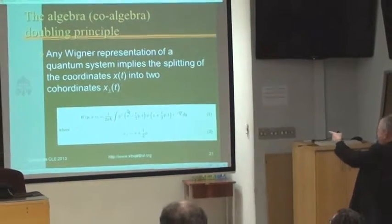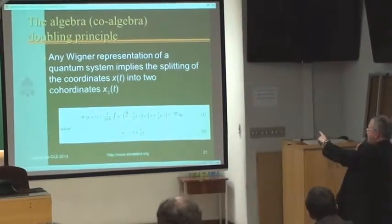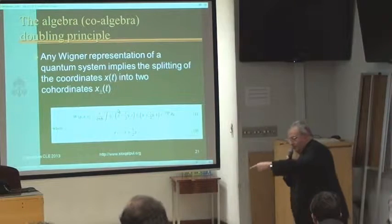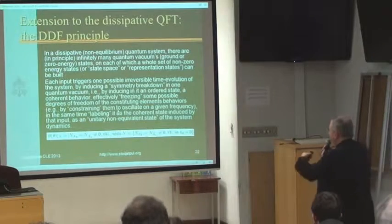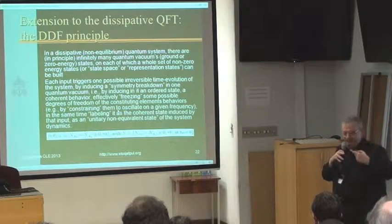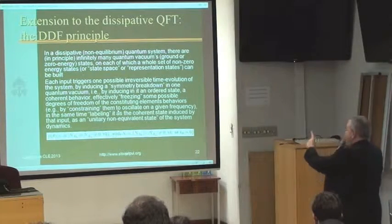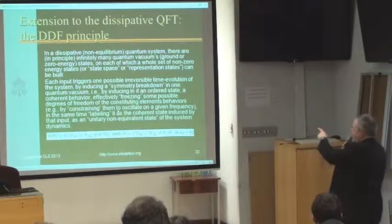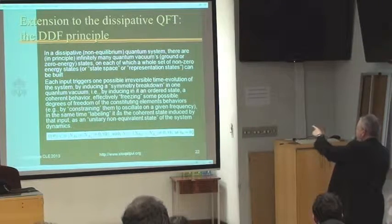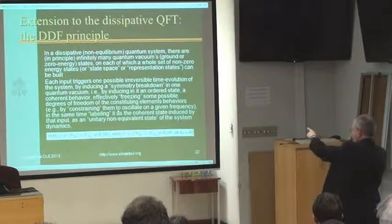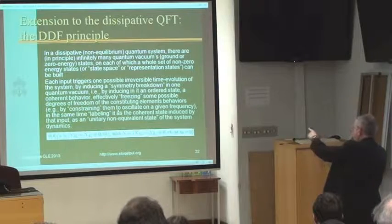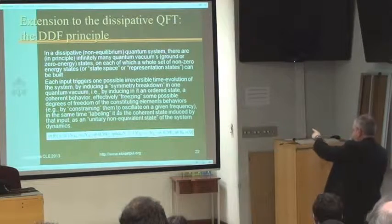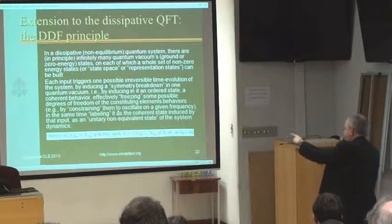The algebra-coalgebra doubling principle: any Wigner representation of a quantum system implies the splitting of the coordinates with respect to time into coordinates going forward and backward in time. In a dissipative non-equilibrium quantum system, there are in principle infinitely many quantum vacuums — ground or zero-energy states — on each of which a whole set of non-zero-energy states or state-space representations can be built. Each input triggers one possible irreversible time evolution of the system, by inducing a symmetry breakdown in one quantum vacuum — that is, by inducing an ordered state and coherent behavior, effectively freezing some possible degrees of freedom.